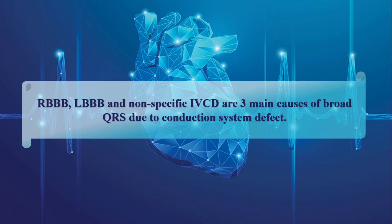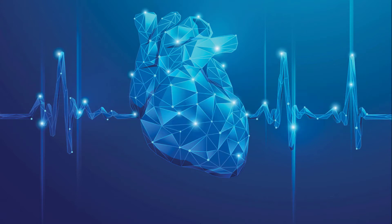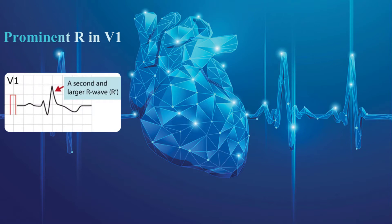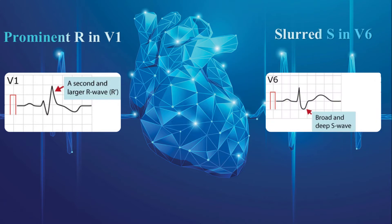As we said in previous episodes, in addition to wide QRS complex, there are two extra criteria for detecting RBBB on surface EKG. First, prominent R or RSR prime pattern in V1, which is the hallmark of RBBB. And second, slurred S in V6 and other lateral leads.